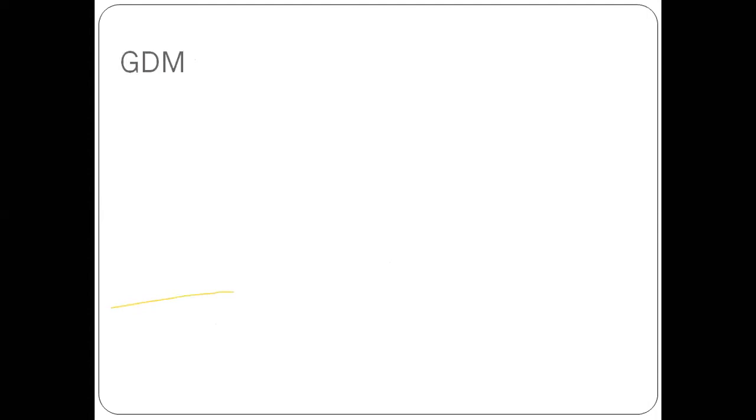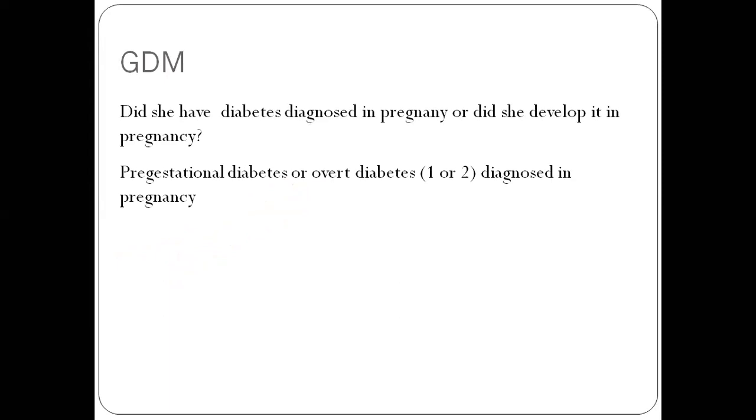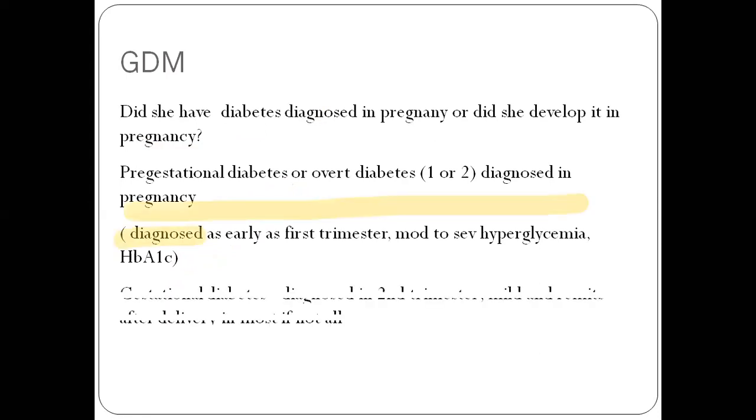Coming to gestational diabetes, GDM. There are two questions. Did the patient have diabetes that was diagnosed in pregnancy? That was pre-existing diabetes? Or did she develop diabetes in the pregnancy? If you had diabetes beforehand and it was just diagnosed in pregnancy, we call it pre-gestational diabetes or overt diabetes. It may be type 1 or type 2 diabetes diagnosed in pregnancy. This is typically diagnosed as early as the first trimester and they will have moderate to severe hyperglycemia. Gestational diabetes will occur in the second trimester. It is expected to be mild. And in most cases, it will normalize after delivery.